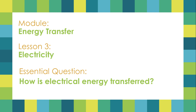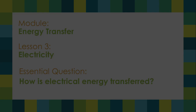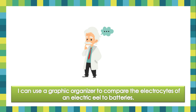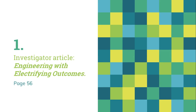The question we're trying to answer in this lesson is how electrical energy is transferred. Our teaching point, yet again, is: I can use a graphic organizer to compare the electrical size of an electric eel to a battery. We're going to read an article, and the activity we're going to complete is on page 56.